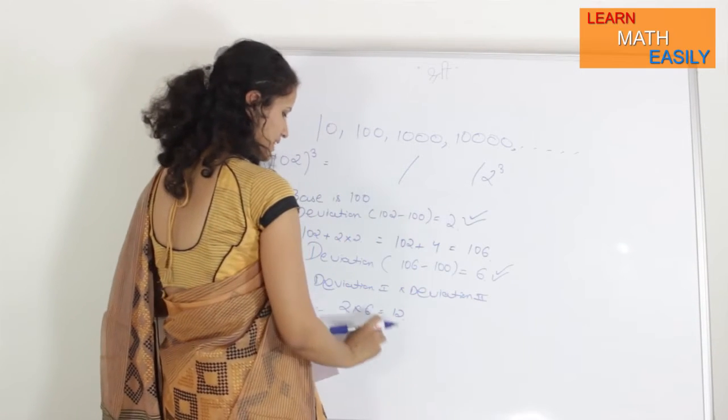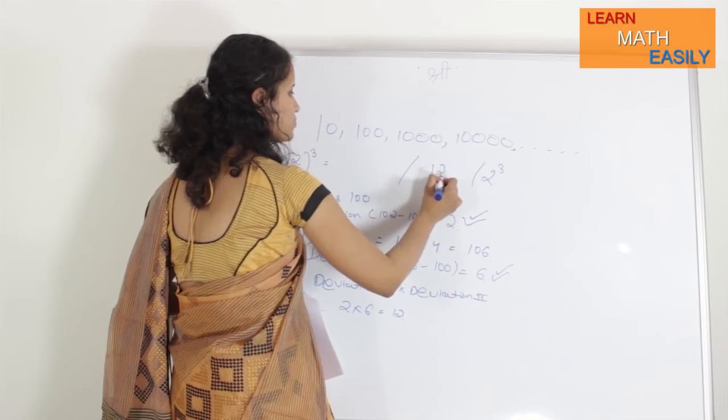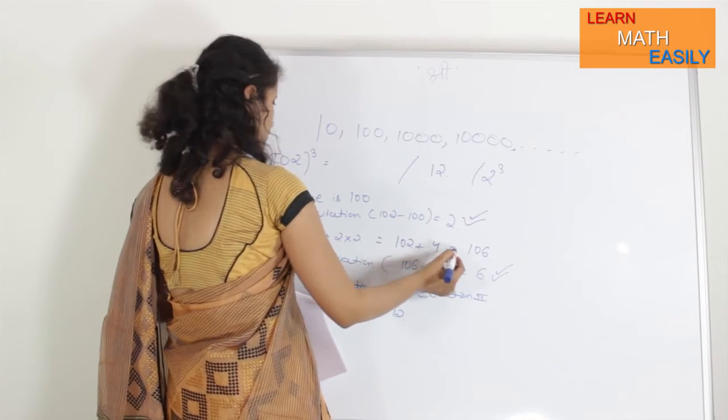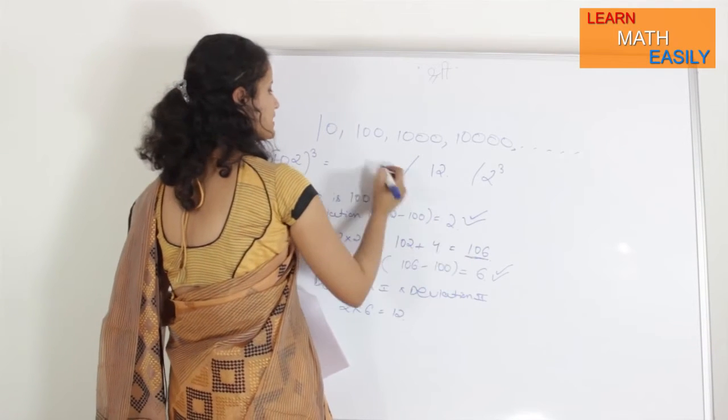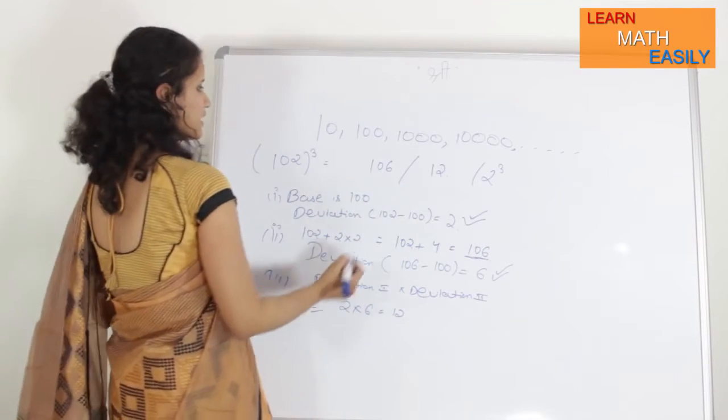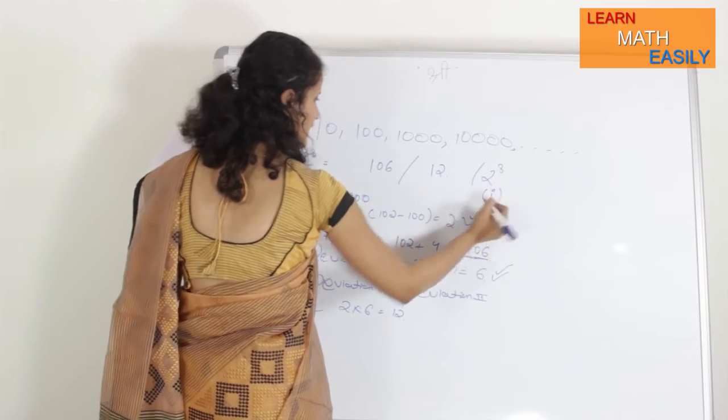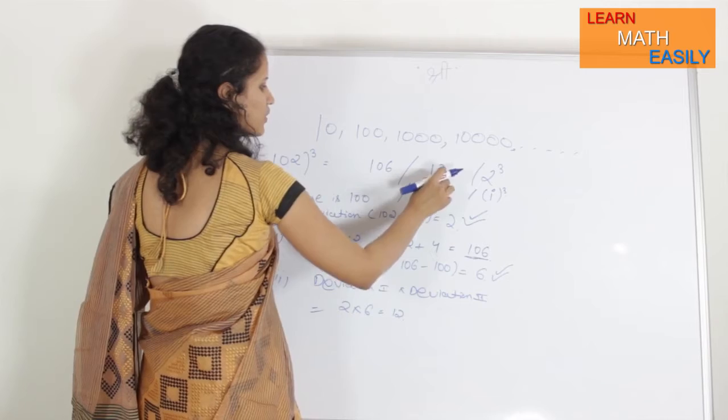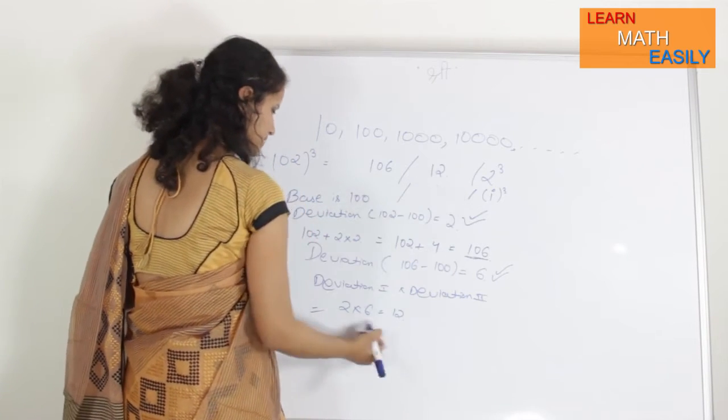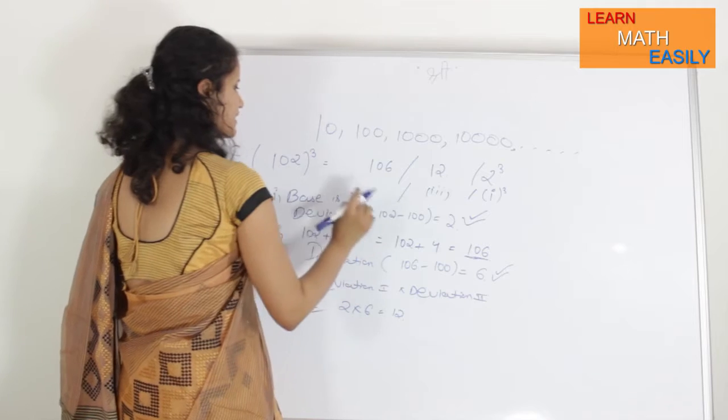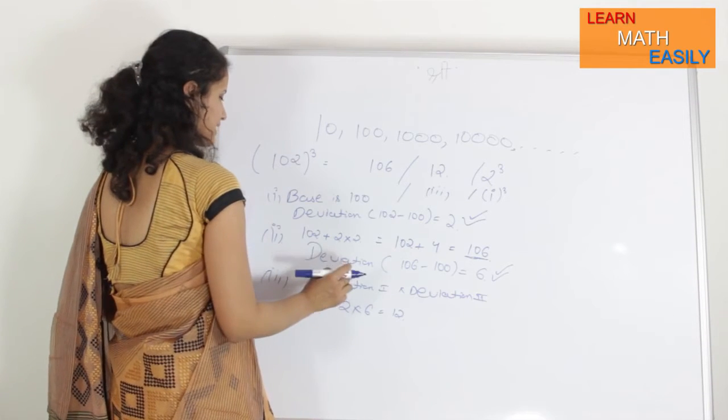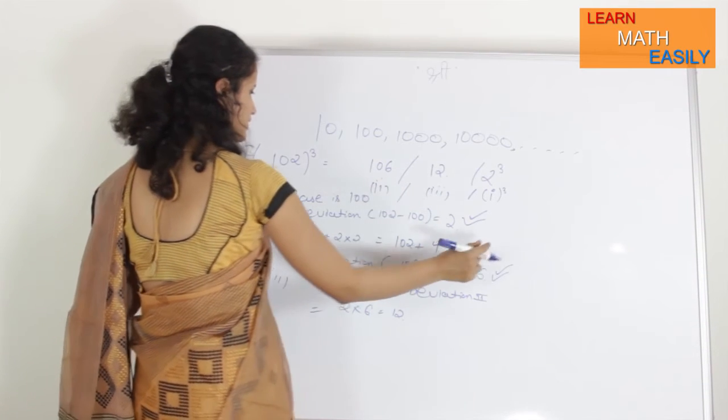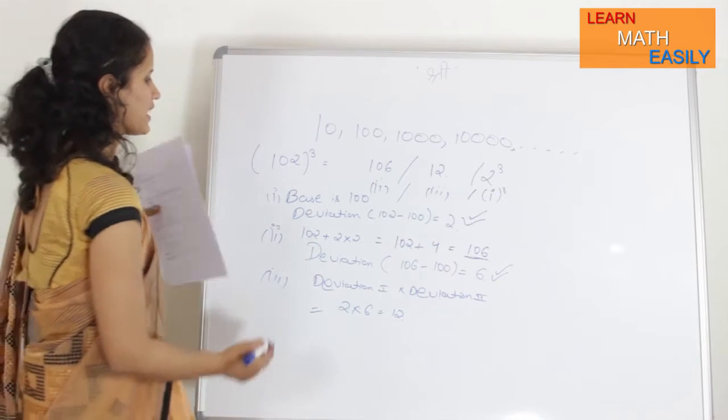So, what I am going to do is, here I will write cube of first deviation, that is 2 cube. Here I am going to write the number that we are obtaining in second part, that is 106 here. In the first part, I have calculated the first deviation, I am writing cube of that. In second column, what I am doing is, what I have done in third part. And, in first column, I will put what I have calculated in second part, that is 106. So, this is my final answer.